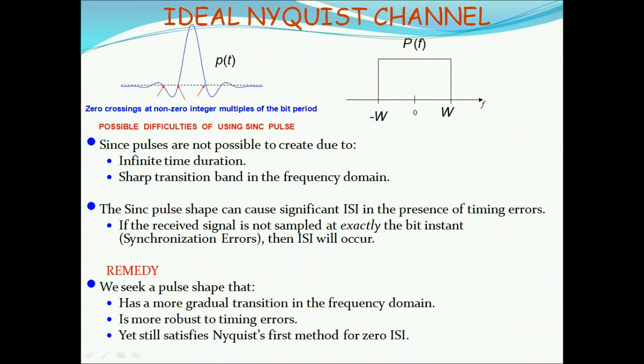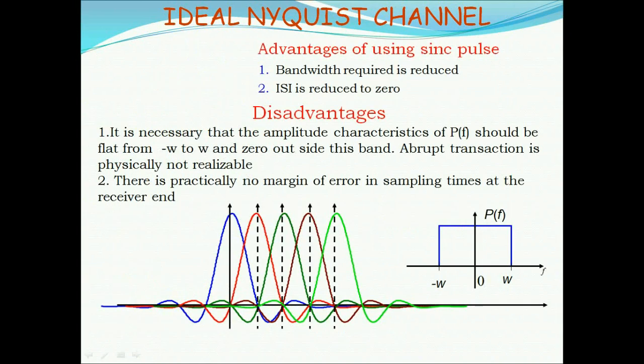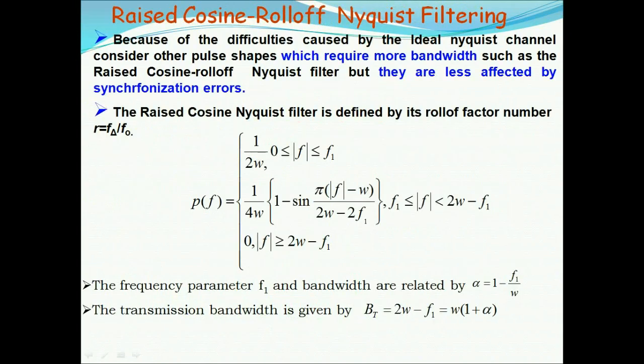Difficulties of using sinc pulses: sinc pulses are not possible to create due to infinite time duration and sharp transition band in the frequency domain. The sinc pulse shape can cause significant ISI in the presence of timing errors — if the received signal is not sampled at exactly the bit instant, ISI will occur. To overcome this, we seek a pulse shape with more gradual frequency-domain transition that satisfies Nyquist's first method for zero ISI.